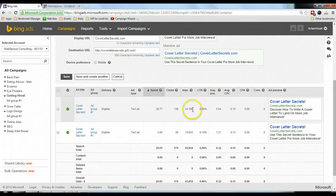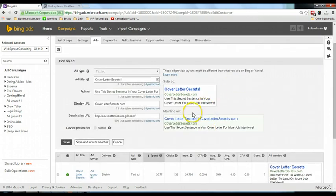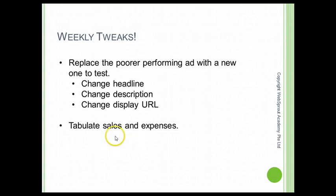The last weekly task is to tabulate sales and expenses for each product. For example, if Product A generated 20 sales and your Bing Ads spend for last week was $10, you made a $10 profit. If Product B made no sales and cost $15 in ads, you may want to consider suspending or deleting that advertisement.